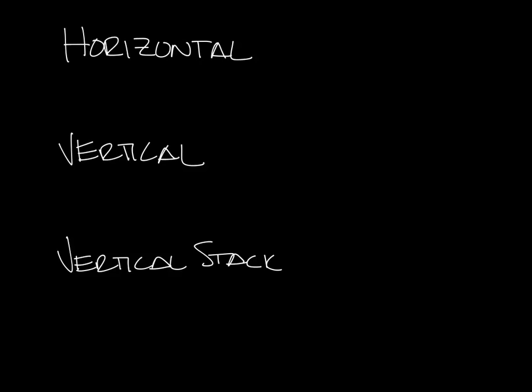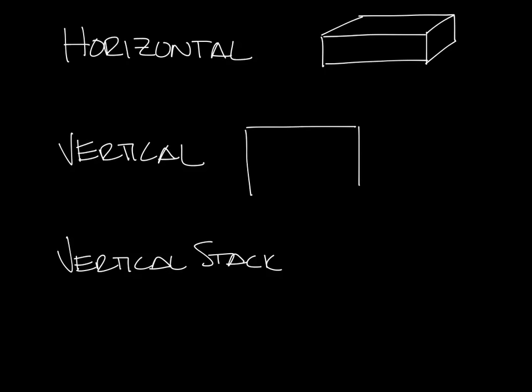Horizontal fan coils have a horizontal footprint, as the name implies. They're typically wide and deep, but not very tall, so they look something like this. Vertical fan coils are wide and tall, but not very deep, so they kind of look like this.